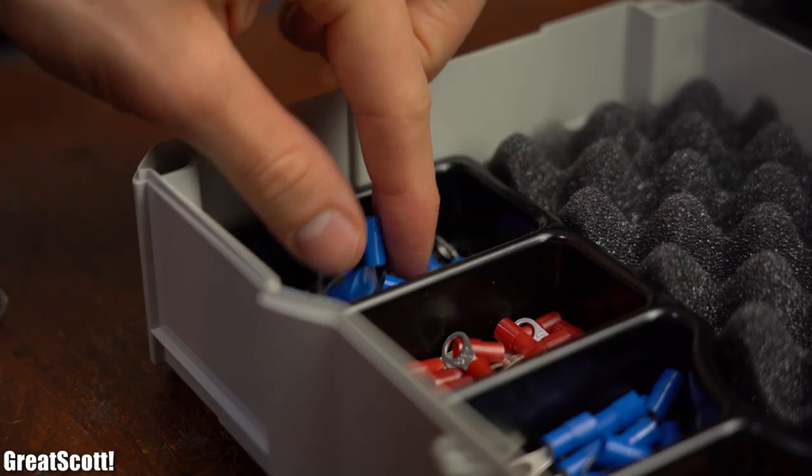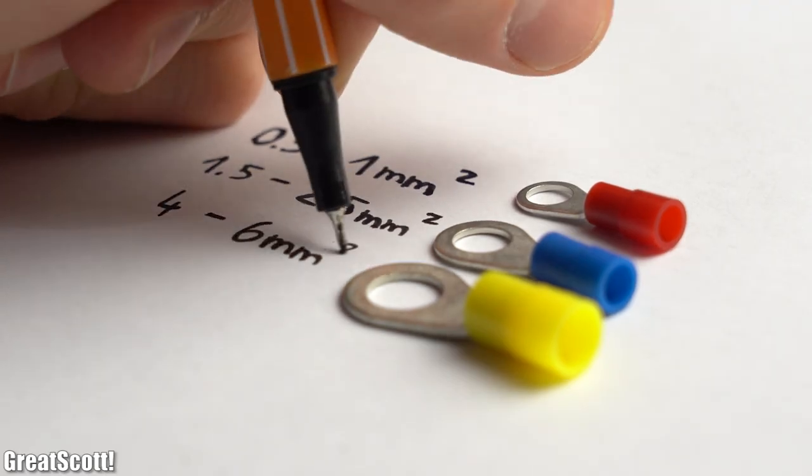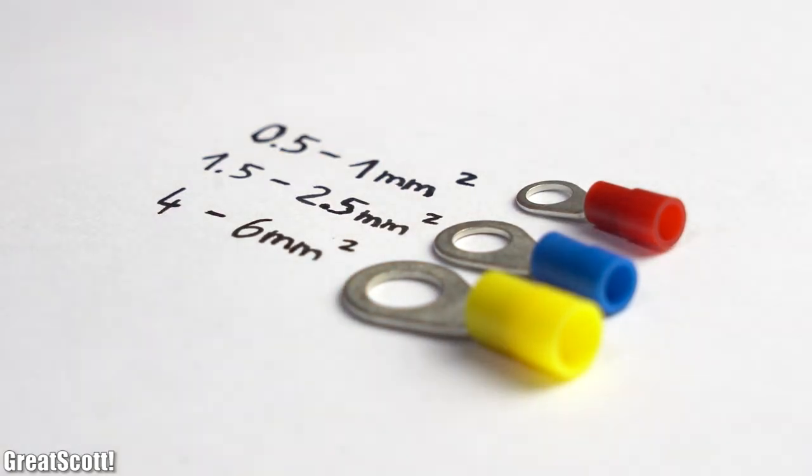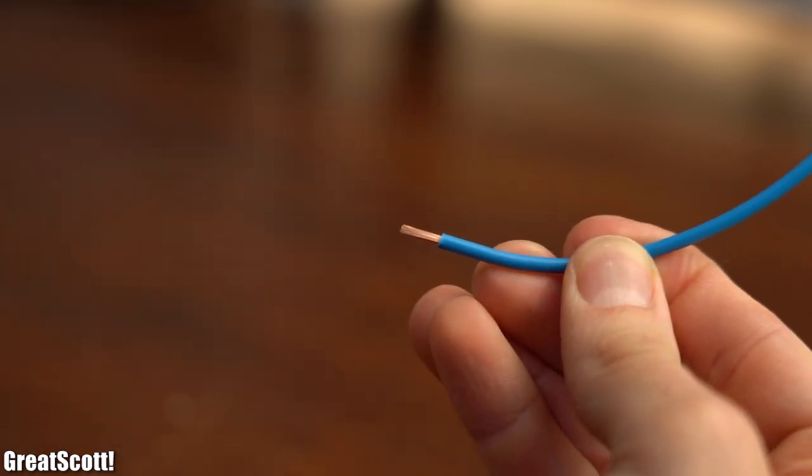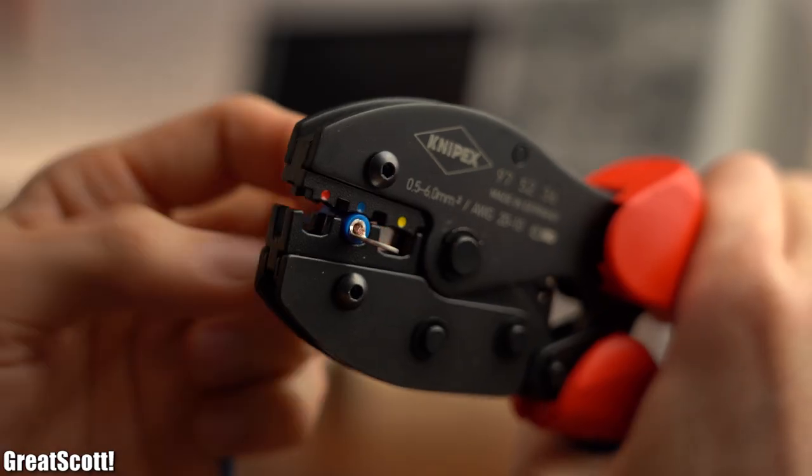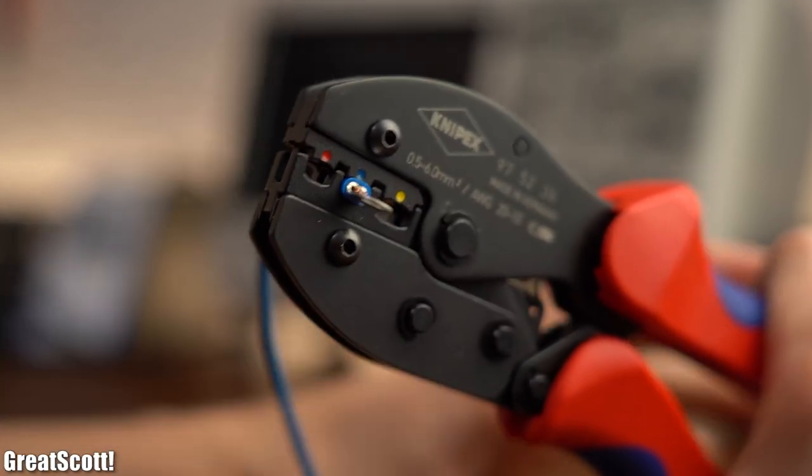To use them, you simply choose a fitting one according to their color, which once again represents different conductor sizes. Strip around 7mm of your wire's insulation, put the shoe on, and use the correctly colored segment of your crimping tool in order to bond the wire with metal through pressure.